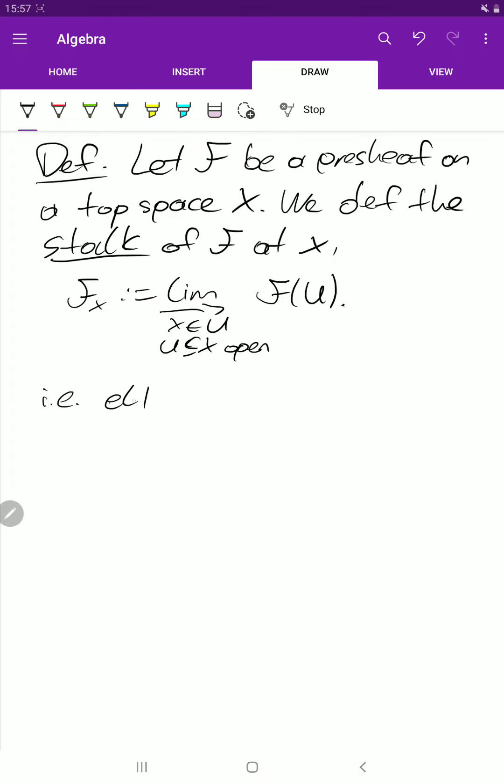Elements in F of x are tuples (f, U), where we have f in the sections of capital F, so f of U, and x of course should be in U, and we have an equivalence relation.